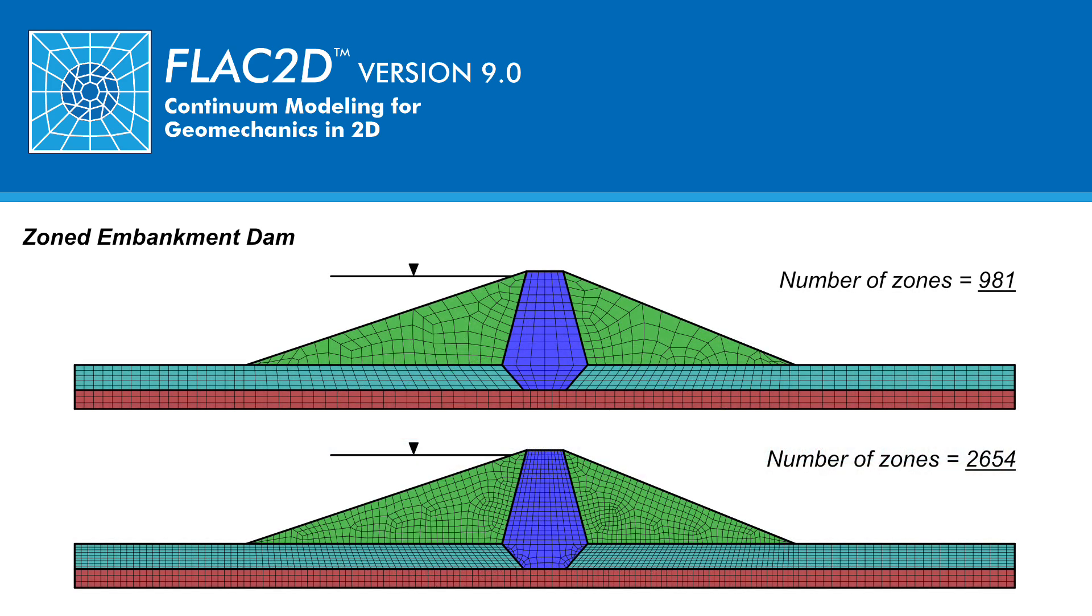Two numerical meshes were developed for potential use. The first numerical mesh is composed of 991 numerical zones, and although not sufficiently refined for accurate wave propagation, the model does have less than 1,000 numerical zones so that the analysis can be completed using the free demonstration mode version of FLAC 2D available.